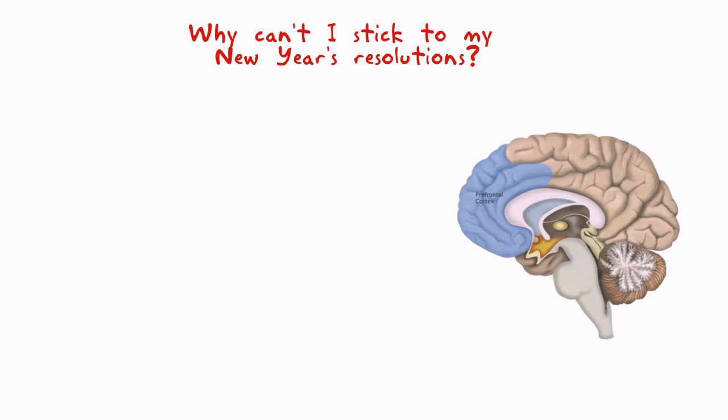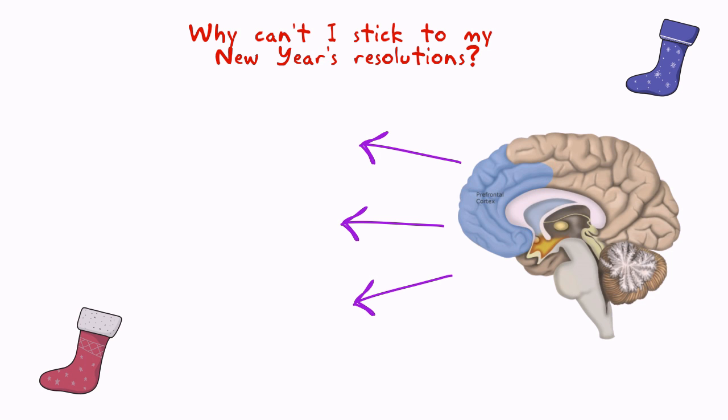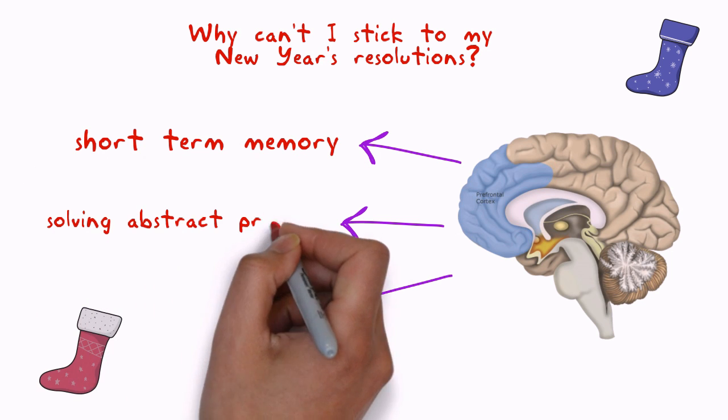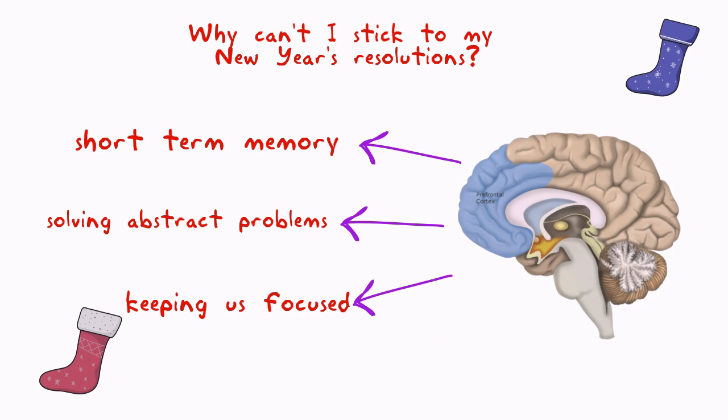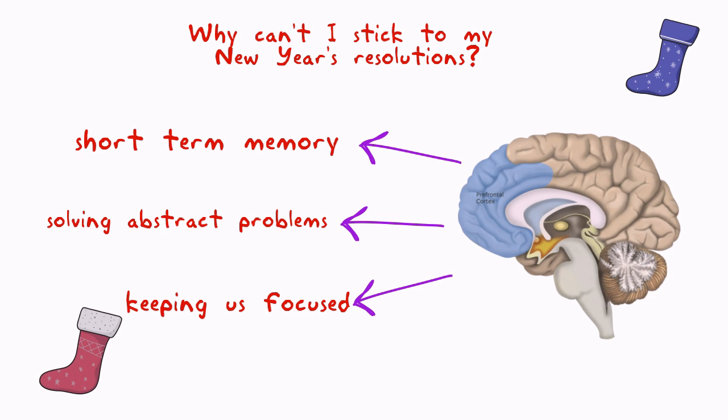Our prefrontal cortex, a small area in the brain, is responsible for our willpower. The prefrontal cortex is pretty busy. It not only has to keep our New Year's resolutions on track, it also has to take charge of short-term memory, solving abstract problems, and keeping us focused. It's not a lack of discipline, it's your overworked brain being too busy.